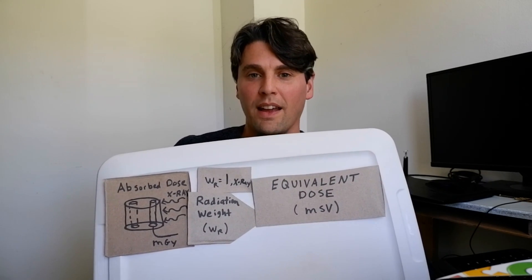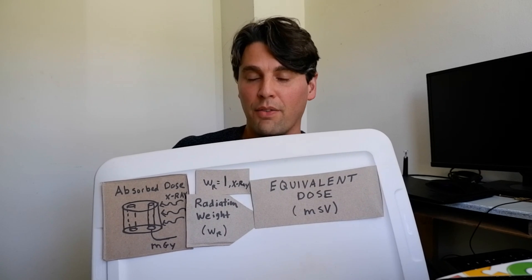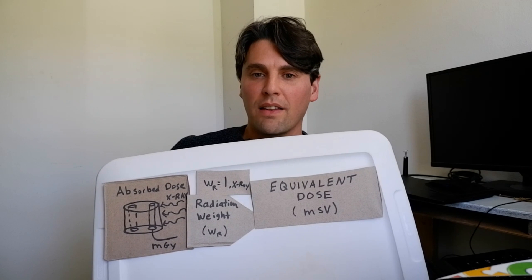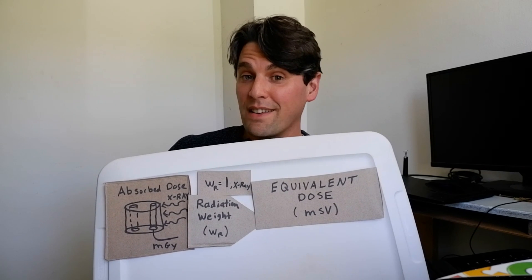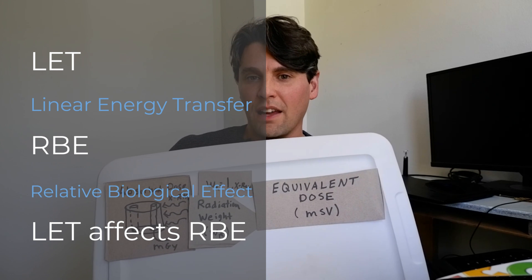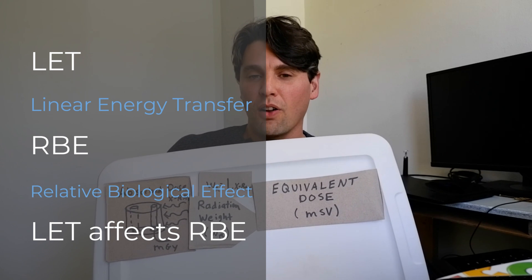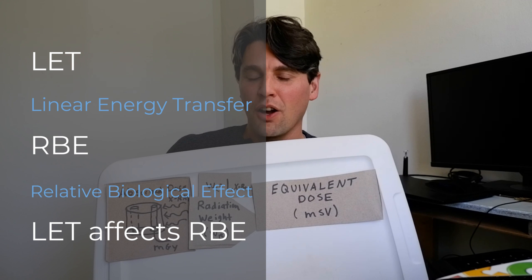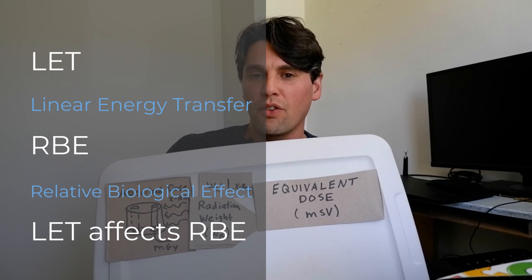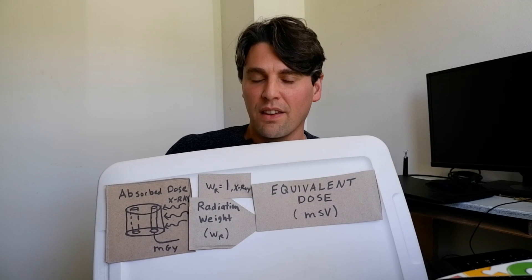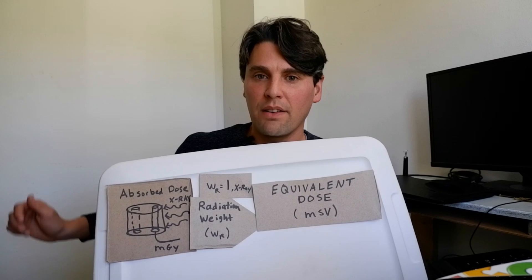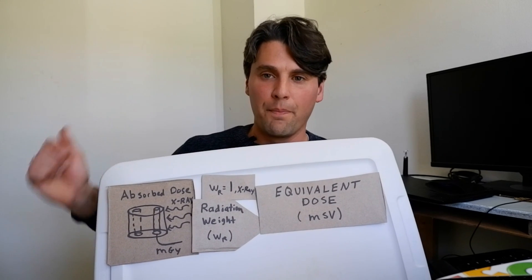So that's what our equivalent dose is: we just take our absorbed dose and multiply by one if we're using x-rays. If we were using some heavy charged particles or neutrons, we would have to have a different weighting factor because those types of radiation have what's called a higher LET or linear energy transfer. The ability for those things to do damage given the same dose is higher, but we're talking about x-rays here, so all we have to do is multiply by one.